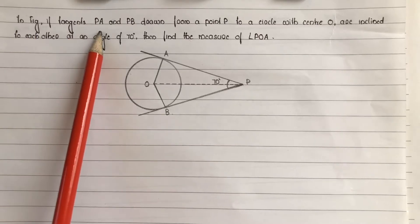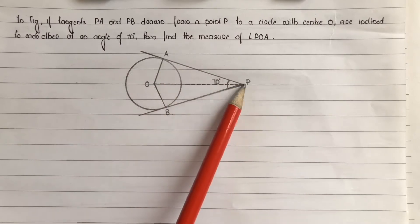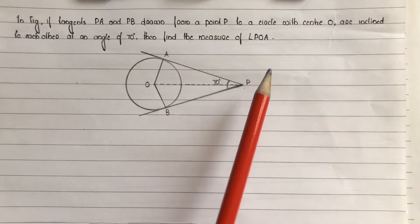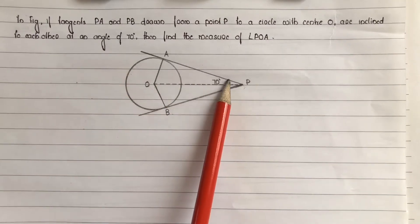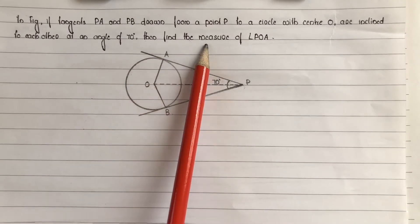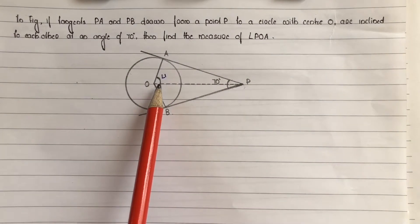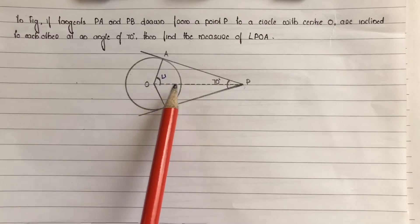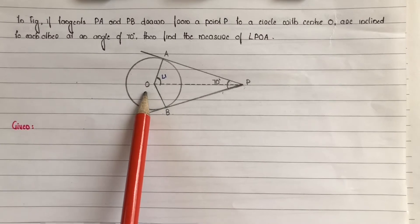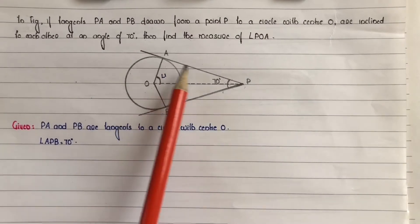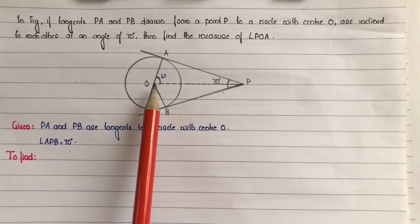In the figure, tangents PA and PB are drawn from a point P to a circle with centre O, and they are inclined to each other at an angle of 70 degrees. We need to find the measure of angle POA. Given: PA and PB are tangents to the circle with centre O, and angle APB is equal to 70 degrees.